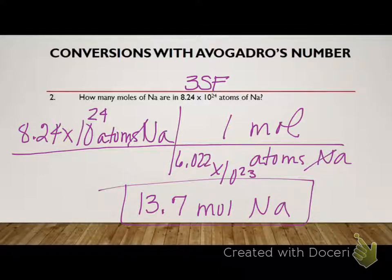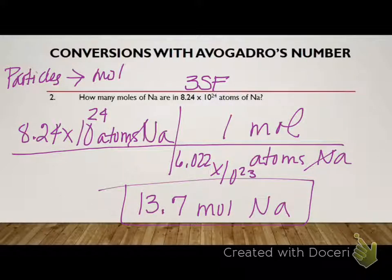So, this time when I'm going atoms, or we'll say, or you can say particles. Let's change that to particles. Because it could be molecules, it could be other things. And sometimes when we just write atoms, we get confused. So if I'm going particles to moles, I divide by Avogadro's number. So that's how you do those.